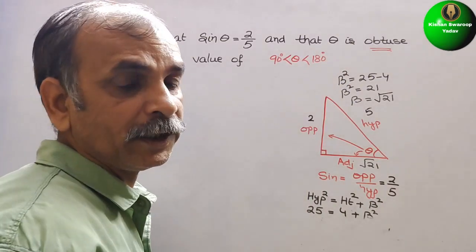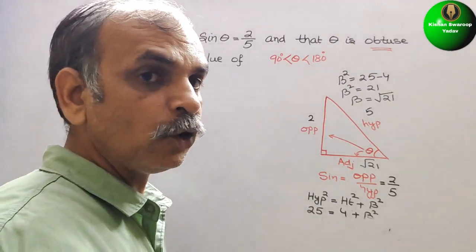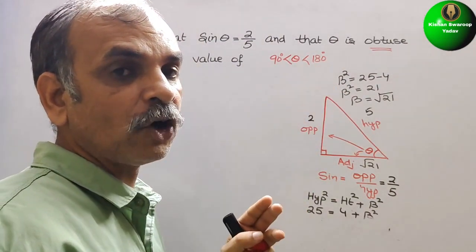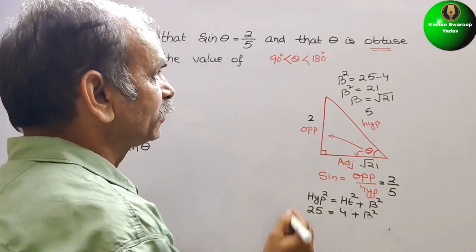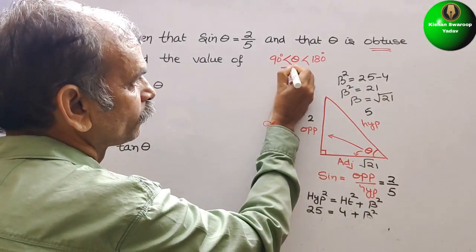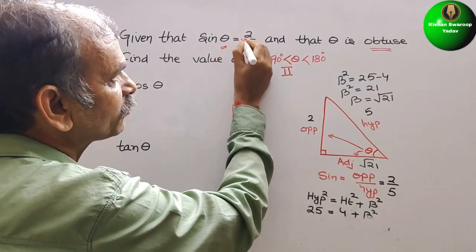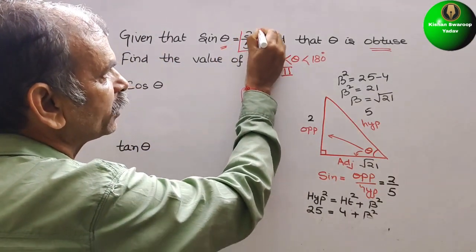In between this, we have to find it out. So we know that this lies in which quadrant? Second quadrant. So second quadrant is positive in sine, that's why they have given you positive here.